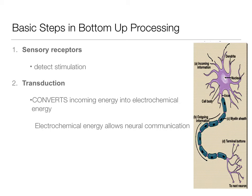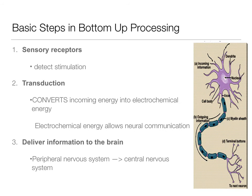We're taking light and turning it into a neuron signal; we're taking sound and turning it into a neuron signal. This allows our sensory system - our peripheral nervous system - to talk to our central nervous system. Transduction is where that conversion happens, and once it does, we can go from neurons in our fingers to neurons in our sensory cortex via this electrochemical, neural communication.